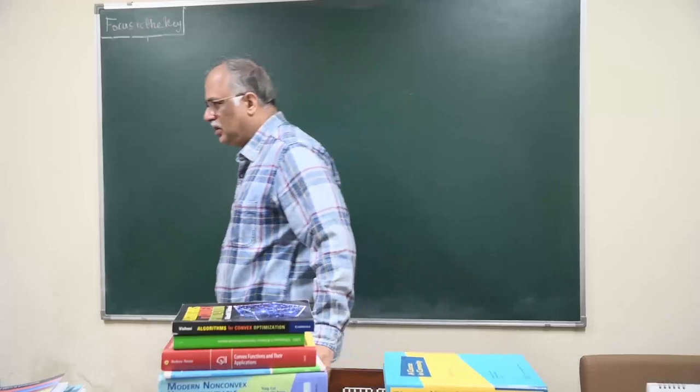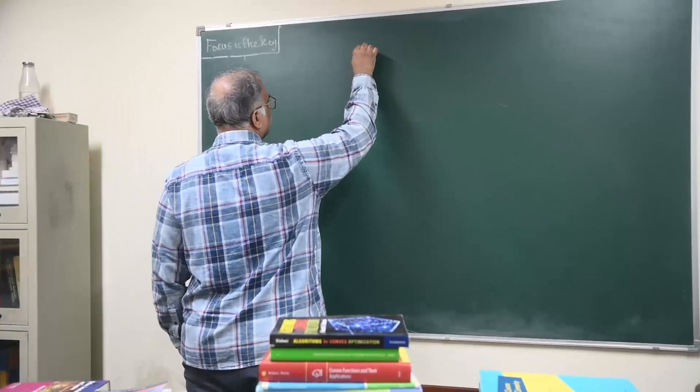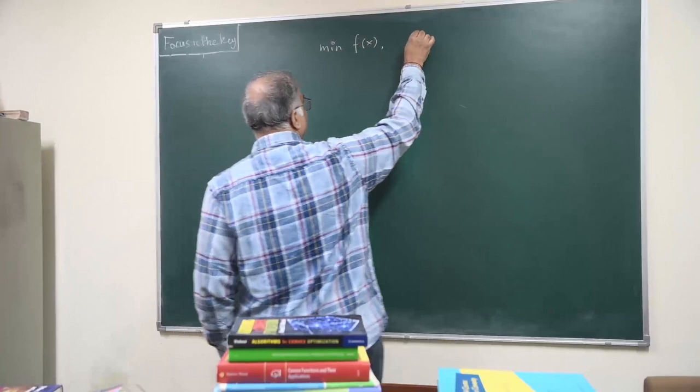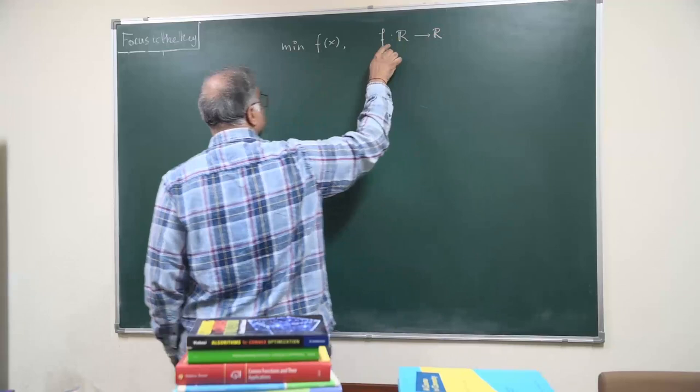So here I would just like to give a small explanation. You have already learnt in your calculus courses asking you to minimize the function f(x), where f is a function from R to R. And if this is differentiable, then you know that if x star, you want to find a local minimizer.